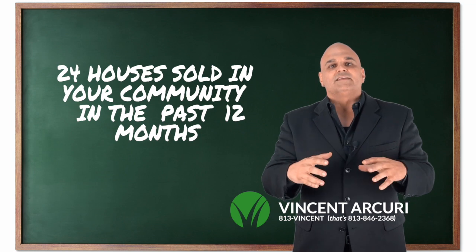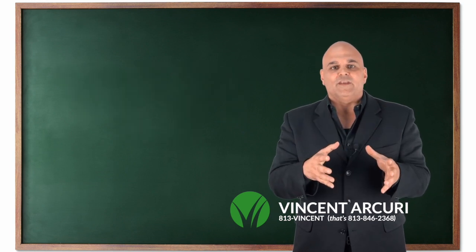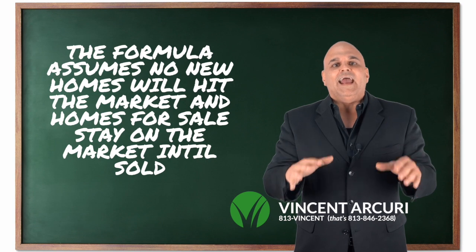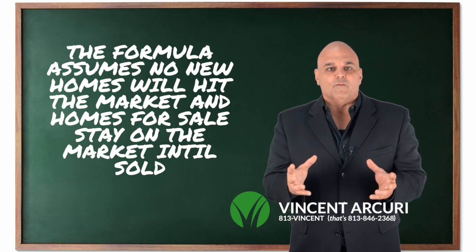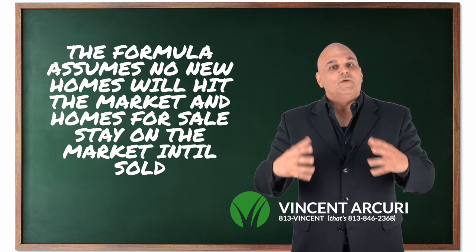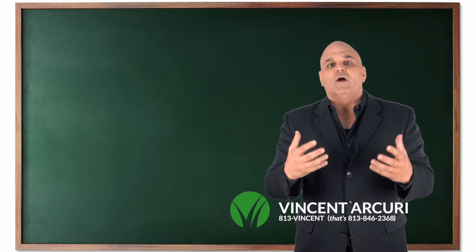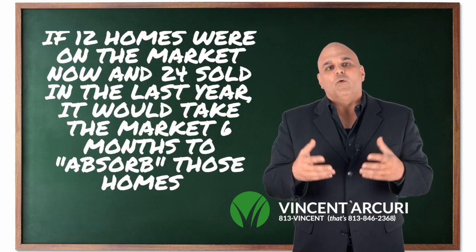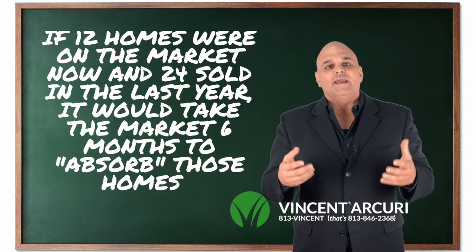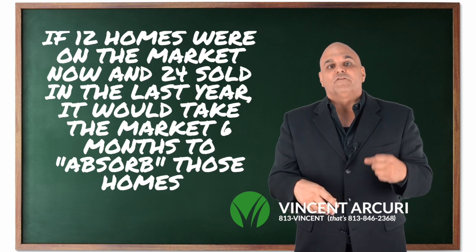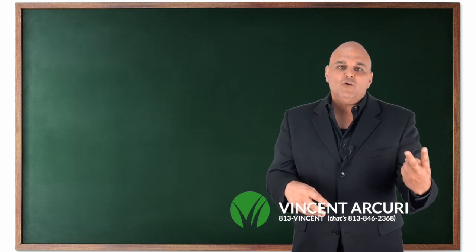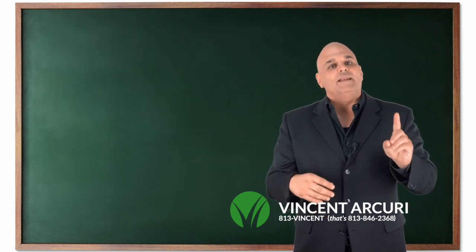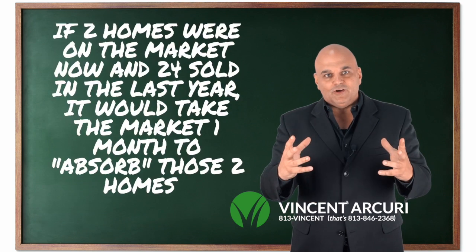We're going to say that of the homes that are for sale now, no new homes are going to enter the market and no homes are going to be removed from the market. So in this example, let's say that there were 12 homes for sale in your particular neighborhood — well, the absorption rate is six months. Now, if there were only two homes for sale in your community, then the absorption rate is one month. You get the picture?